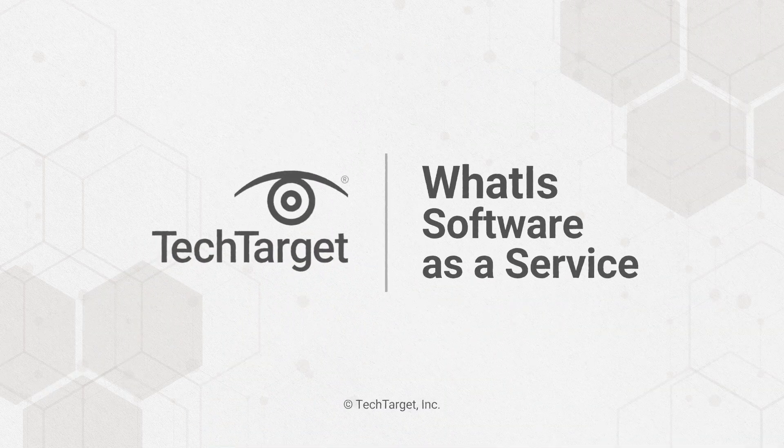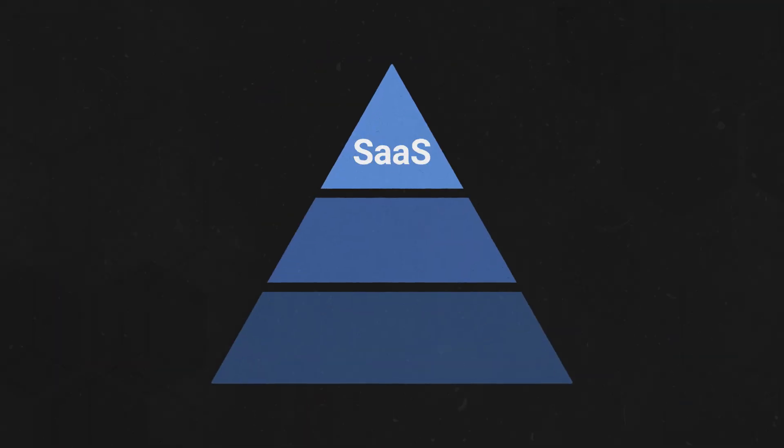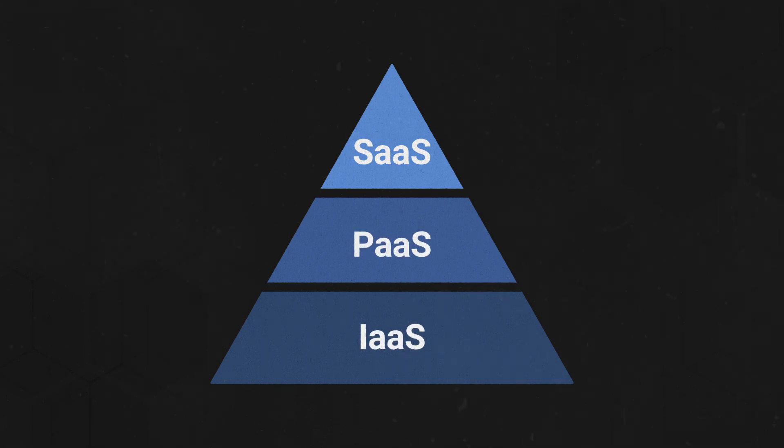Why own when you can rent? We're not talking about homes. Software as a Service, or SaaS, is one of the three main categories of cloud computing, alongside Infrastructure as a Service and Platform as a Service. And it's the most common among consumer-level products, so this explanation might be simpler.